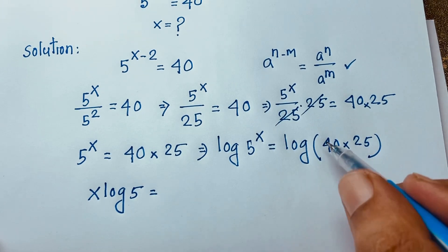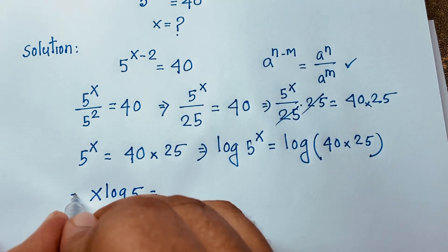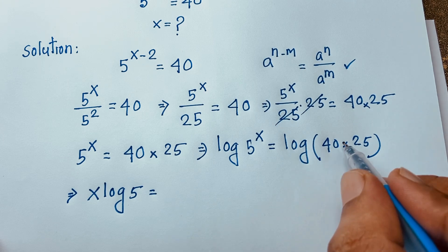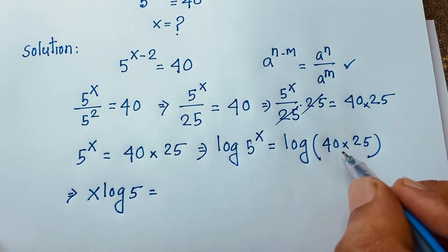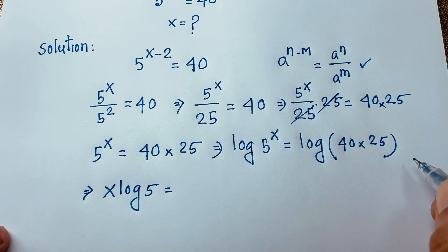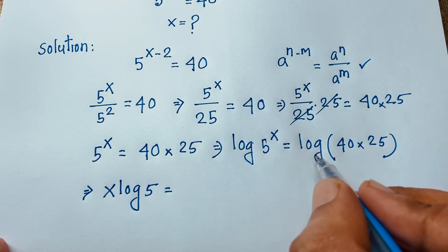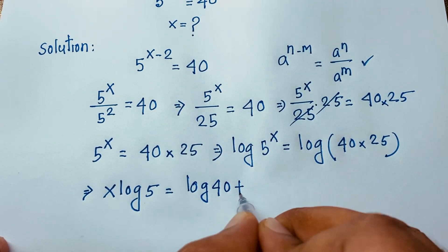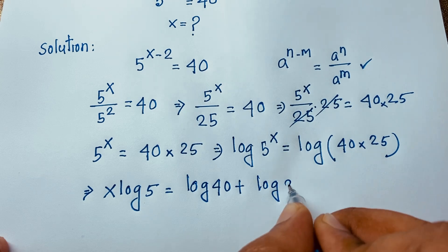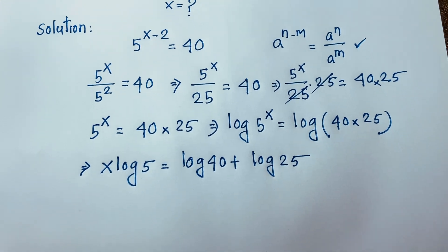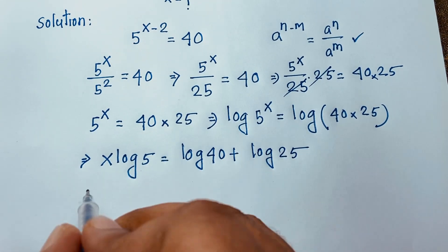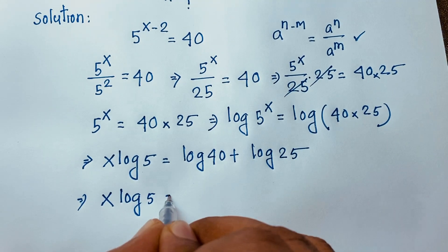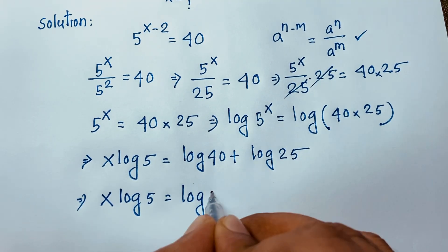Using the logarithm product rule, log(a × b) equals log a plus log b. Applying this formula, the right side becomes log 40 plus log 25. So we have x log 5 is equal to log 40 plus log 25.